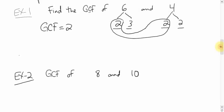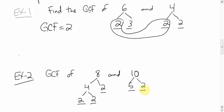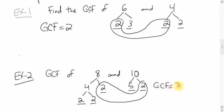What is the greatest common factor of 8 and 10? Break up 8: it's made up of 4 and 2, and that 4 breaks into 2 and 2, giving prime factors 2, 2, 2. 10 is made up of 5 times 2. We play go fish and see that they both have a 2 in common. The 8 does not have a 5, and 10 does not have any more 2s. So the greatest common factor is 2.